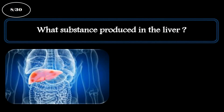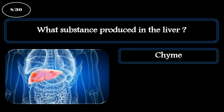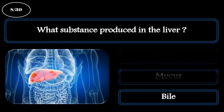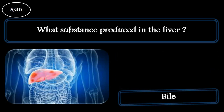Question 8. What substance is produced in the liver? A: Chyme. B: Mucus. C: Bile. The correct answer is bile.